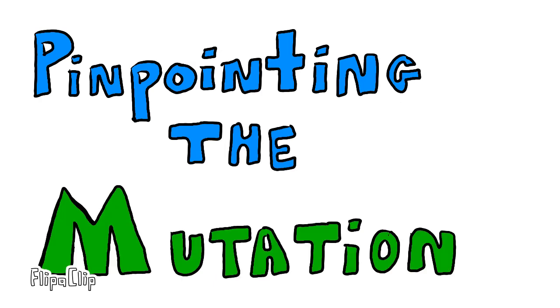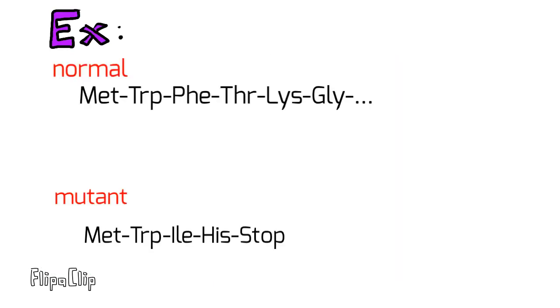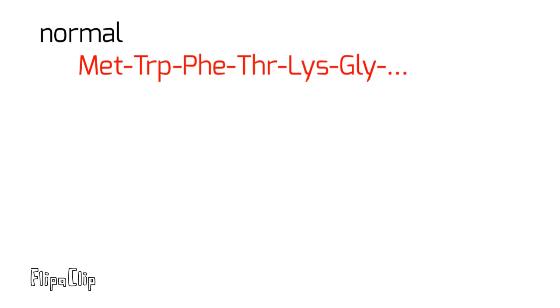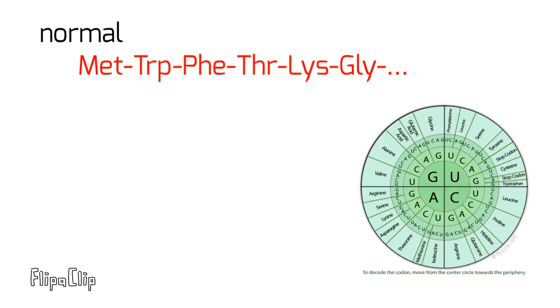Now, let's apply this knowledge. In this example, we're given a normal protein and a mutant protein. First, let's use the chart to figure out the mRNA strand using the given amino acids.